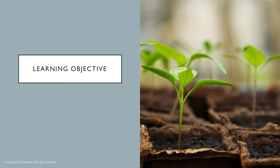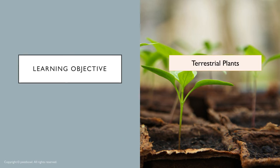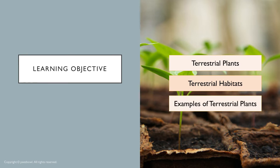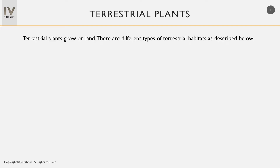Hi. In this video, we will learn about terrestrial plants, various types of terrestrial habitats, and examples of plants that grow in these habitats. Terrestrial plants grow on land. There are different types of terrestrial habitats.